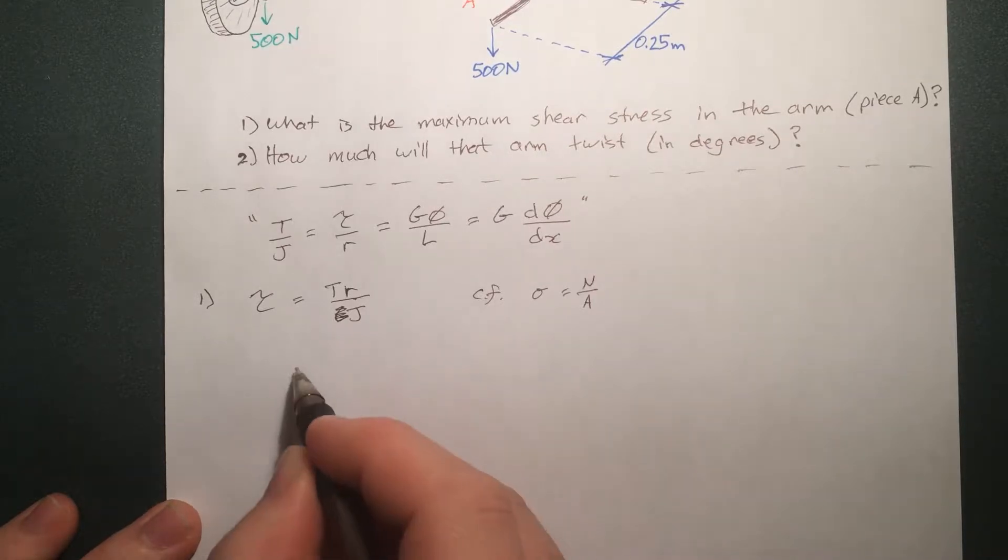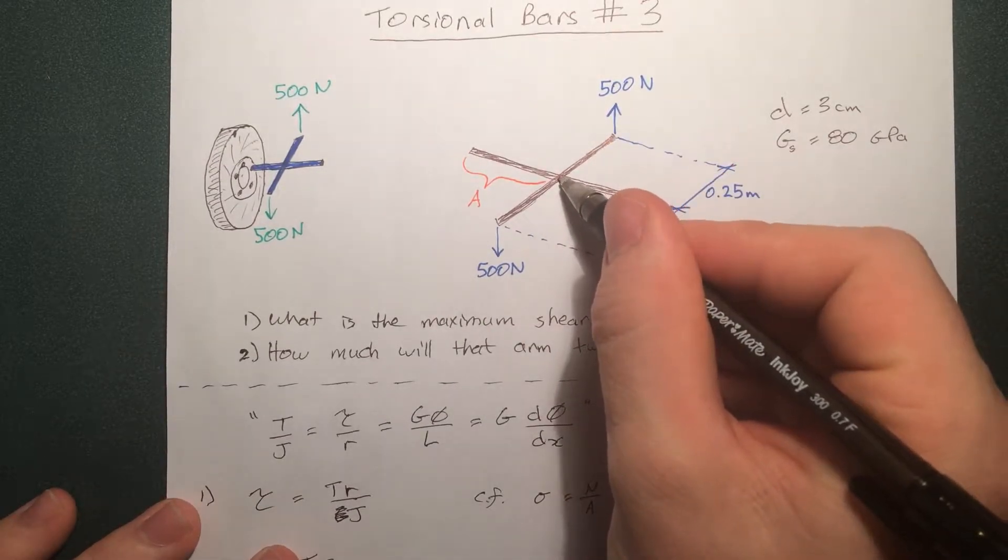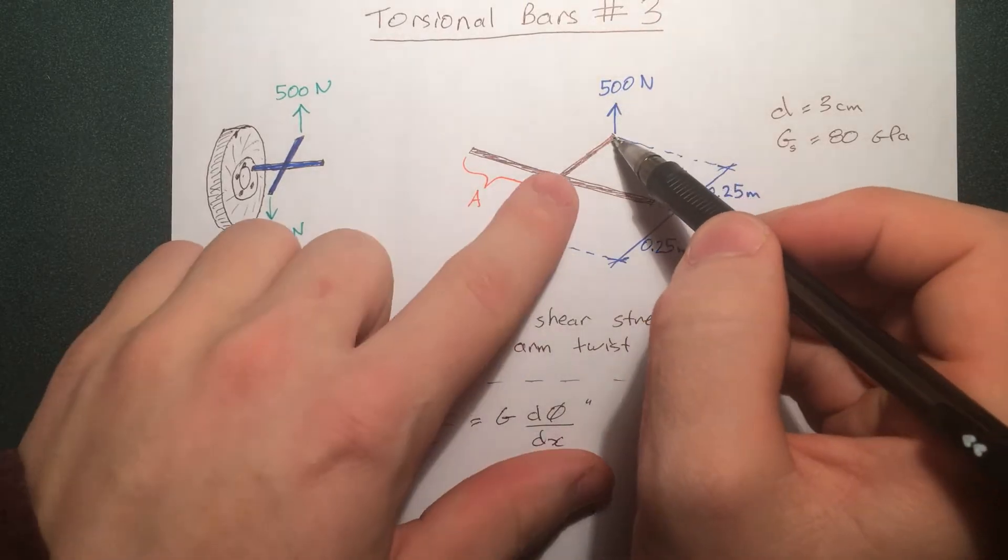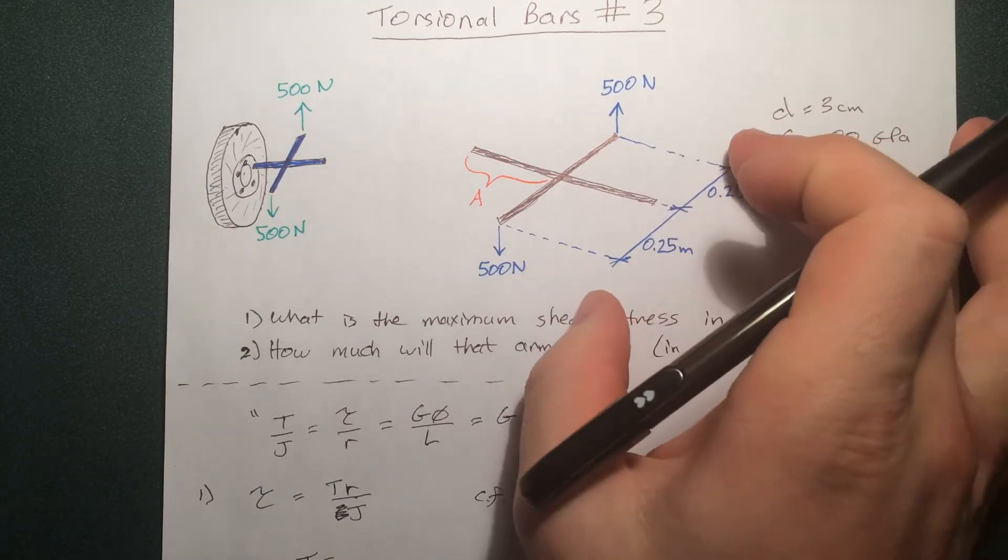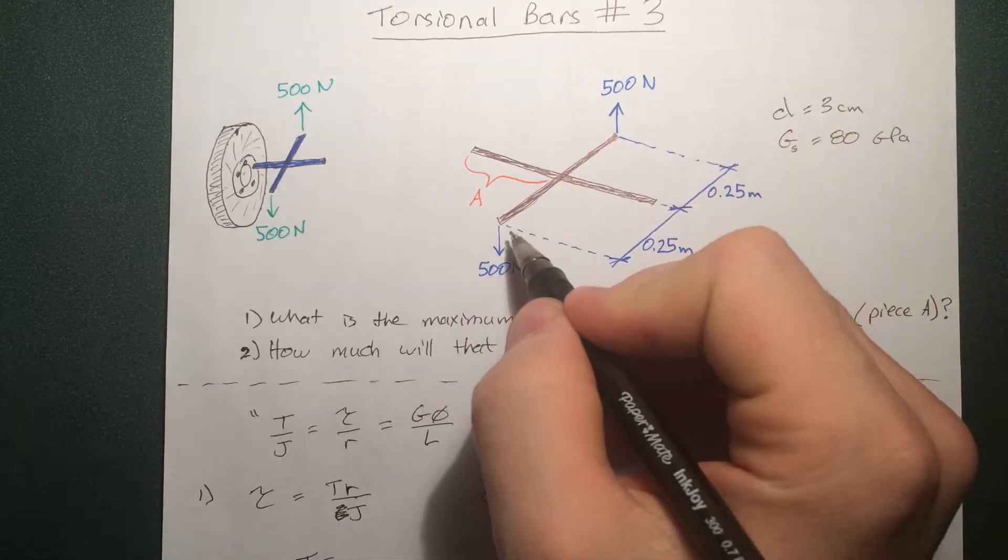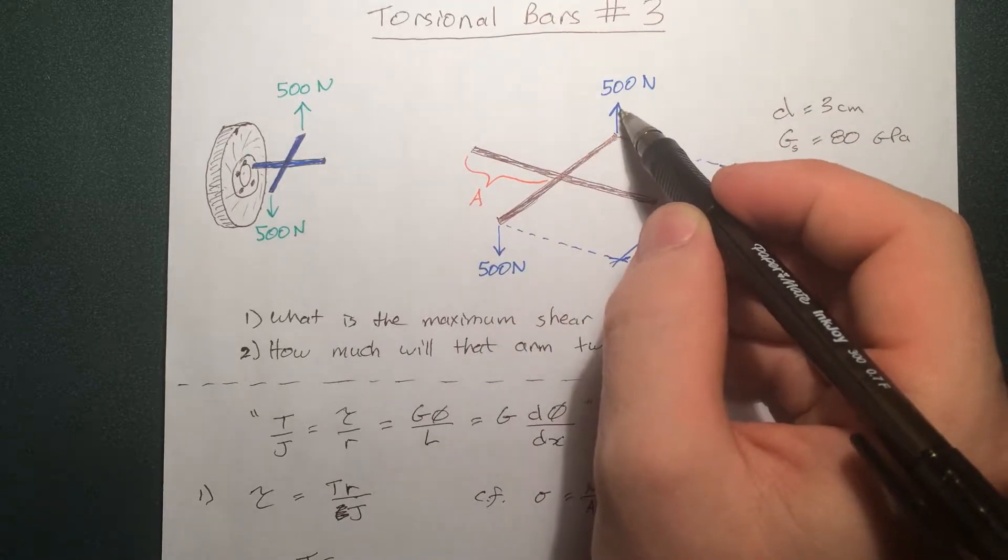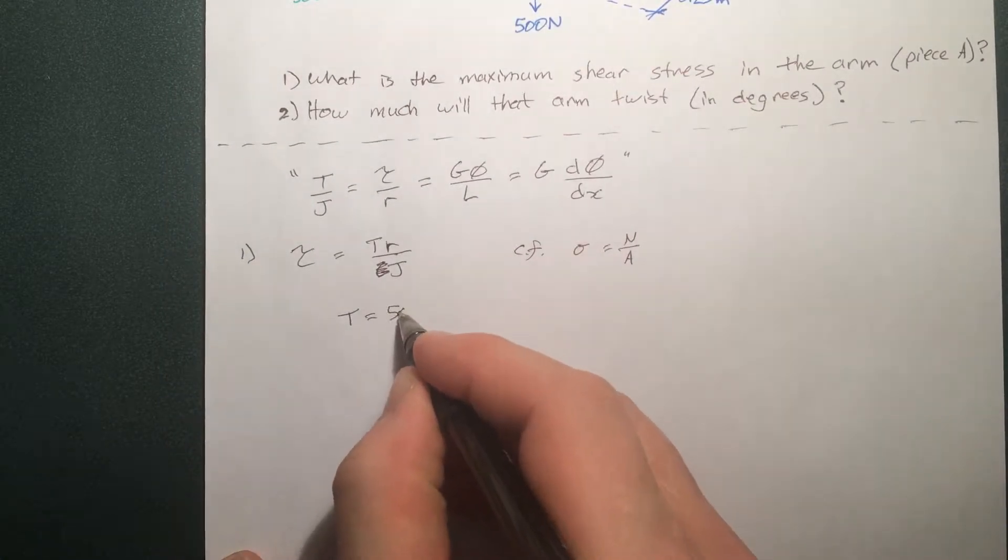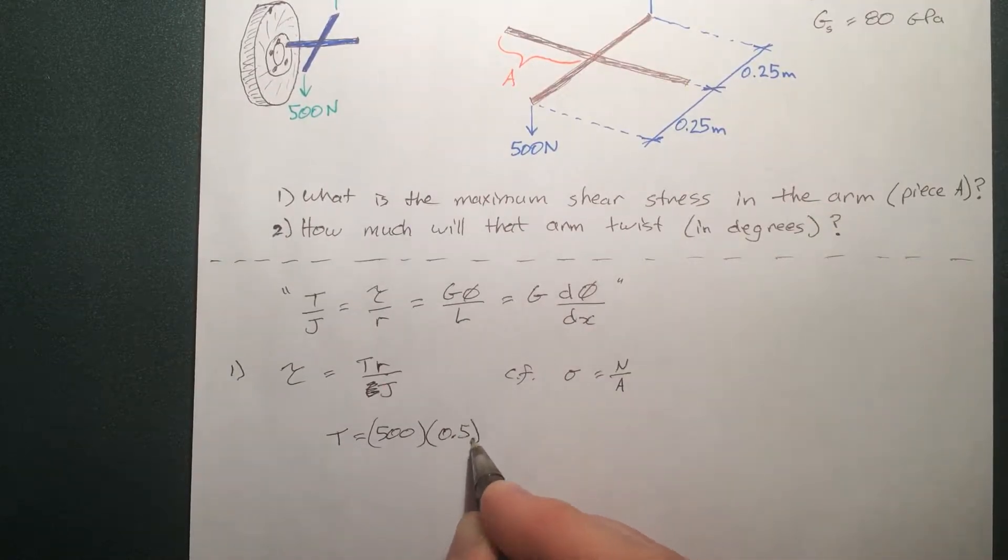We notice that there's these two forces that are applied from this point because this is where it's going to be rotating about. So we can say the torque is this force times this distance plus this force times this distance. Or since we notice it's a case of symmetry and the forces are the same in opposite directions, it's called a moment or a coupled moment or a couple. We can say that this force here times the total distance is the actual force. That's going to be 500 times the total distance, that's 0.5 equals 250 newton meters.